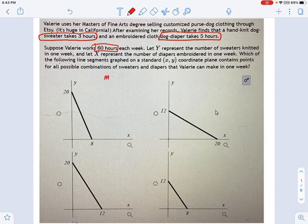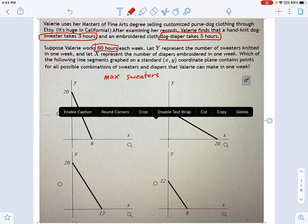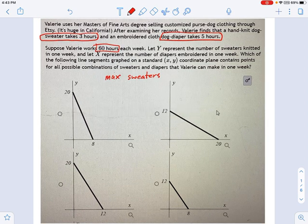Well, the max sweaters is given by this idea of taking that 60 hours. Whoa, give me my pen back. Taking your 60 hours and dividing it by three. So the maximum number of sweaters is 20.